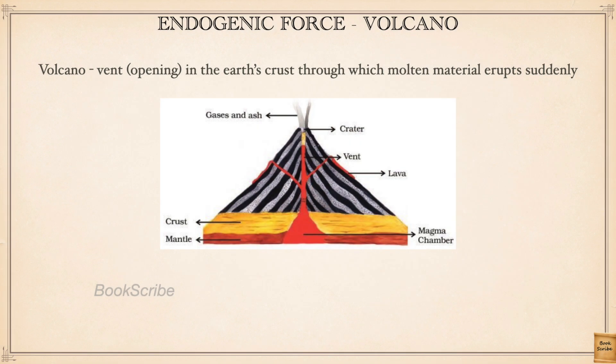Under endogenic force, the first thing we will see is a volcano. A volcano is a vent or an opening formed on the earth's crust. Under the crust is the mantle, and lava comes from the mantle through the crust and outside the earth's surface suddenly. This molten lava or magma comes out suddenly, making it an endogenic force. The volcanic setup includes the vent, the volcanic mountain, and the crater through which gas, ash, and lava come out.